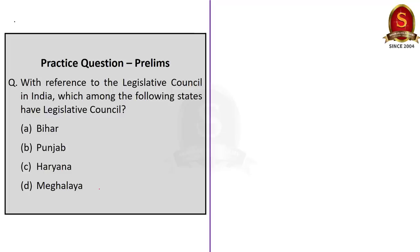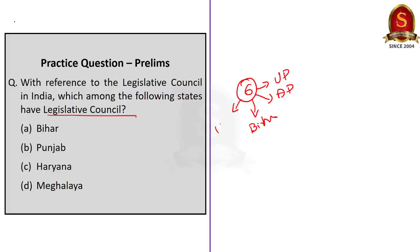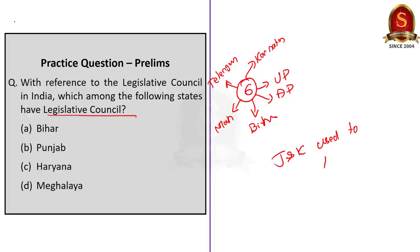Fourth question: With reference to the legislative council in India, which among the following states has a legislative council? In India, only six states have a legislative council — six states have bicameral legislature. The states are Uttar Pradesh, Andhra Pradesh, Bihar, Maharashtra, Karnataka and Telangana. The correct answer is option A, Bihar. Additional information: Jammu and Kashmir used to have a bicameral legislature, but since it has been made into a union territory, it does not have a legislature. Currently only six states have a legislative council, and Bihar is one of them.